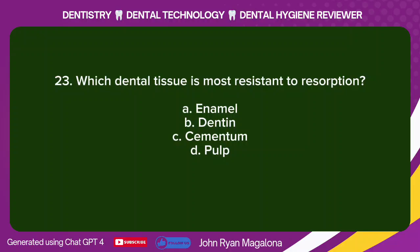Question 23: Which dental tissue is most resistant to resorption? A. Enamel. B. Dentin. C. Cementum. D. Pulp. Answer: A. Enamel.